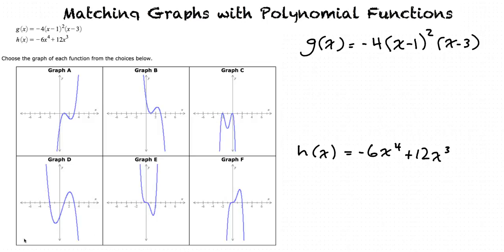These are fundamental pieces of information to know when recognizing graphs of polynomial functions. Let's now look at g of x equals negative 4 times x minus 1 squared times x minus 3. If we were to multiply this out, we would see that the leading coefficient is negative 4 with a degree of 3. Because if we multiply this out, our first term would be negative 4x cubed.